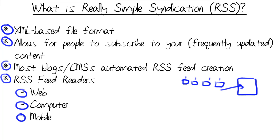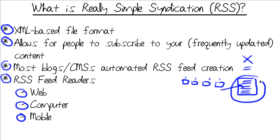RSS feed readers are also called content aggregators, because we're able to aggregate the RSS feeds that give you the most recent posts — the number is configurable by the person who runs the website. And you can scan all of those headlines, and in many cases read the full articles, all from within a single centralized interface.